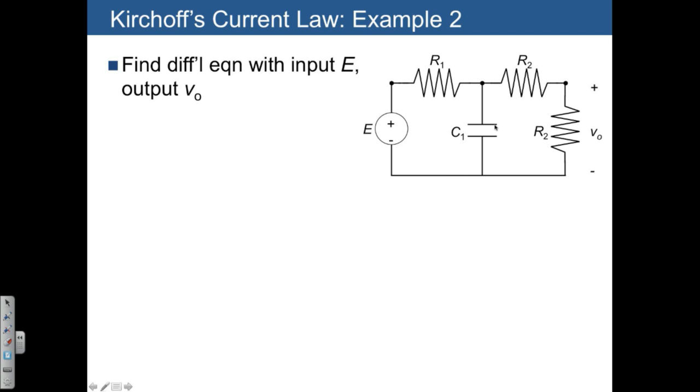Step one is to define voltages and currents of interest. VO is already given to us as the unknown voltage across the resistor, and I'm going to name V1 for the other junction.